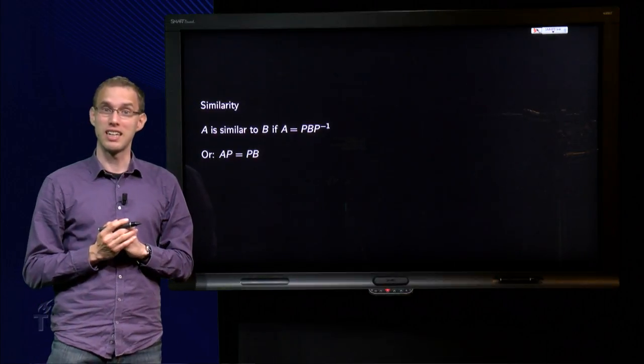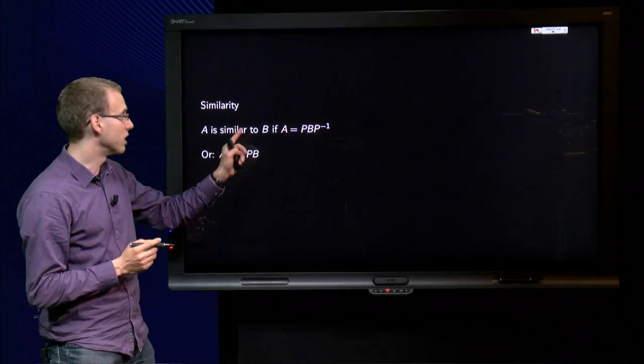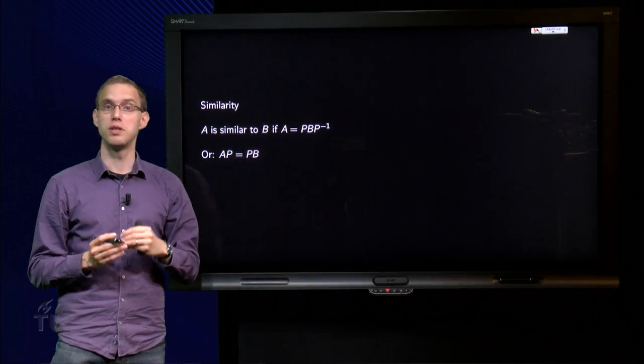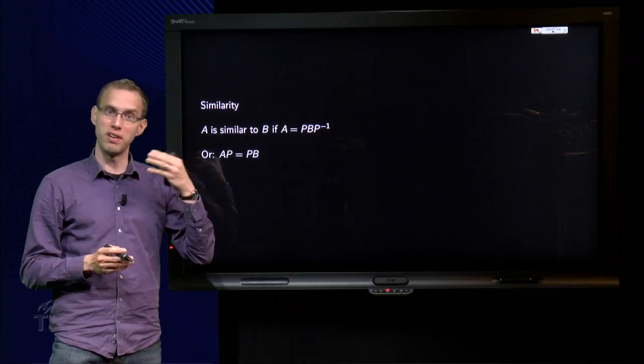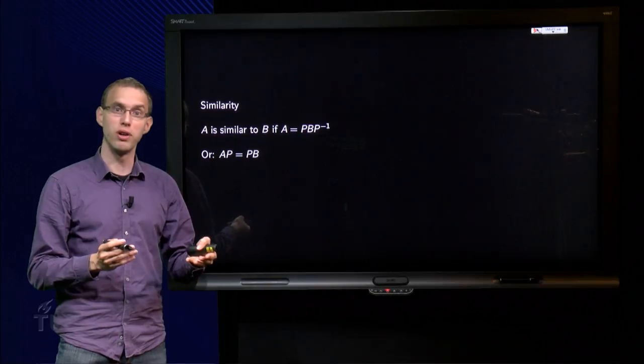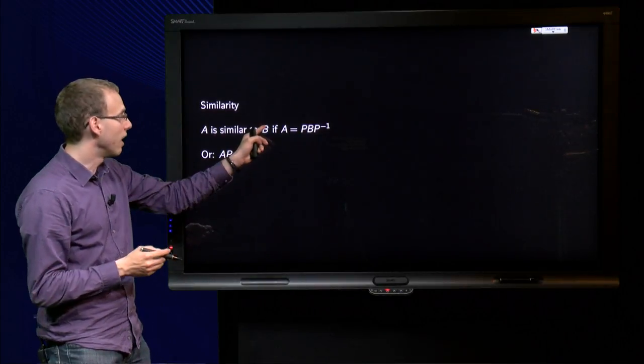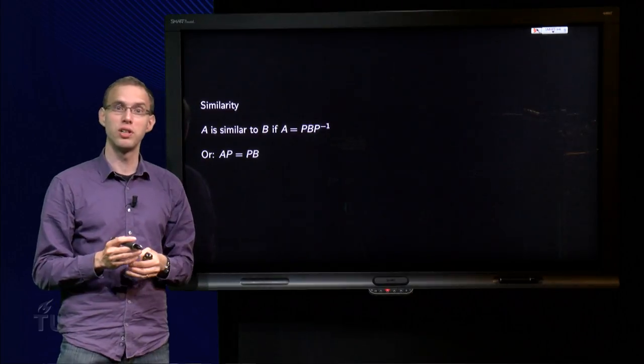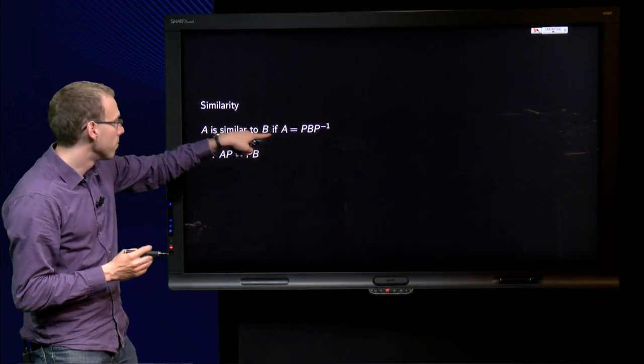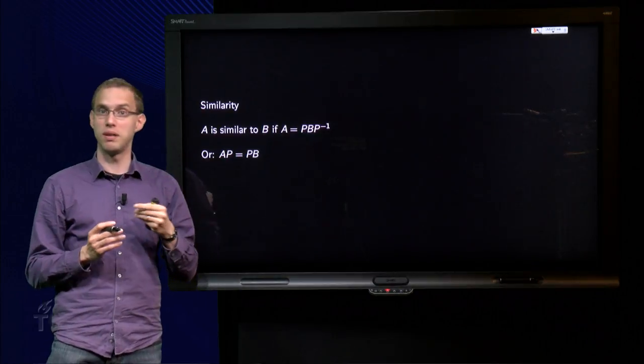Two matrices A and B are similar if you have another matrix P, which is invertible, such as A equals P times B times P inverse. So if given the matrix A and B, if you want to see whether they are similar or not, you have to find the matrix P, which is invertible, such as A equals P times B times P inverse. Or usually it is easier to put the P to the other side and to check whether A times P equals P times B.